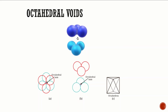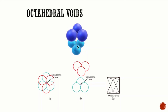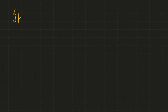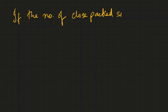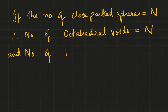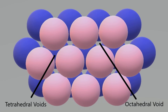These voids or holes in crystals are also called interstices. The number of these voids depends on the number of close-packed spheres. If the number of close-packed spheres is n, then the number of octahedral voids generated equals n, and the number of tetrahedral voids generated equals 2n.